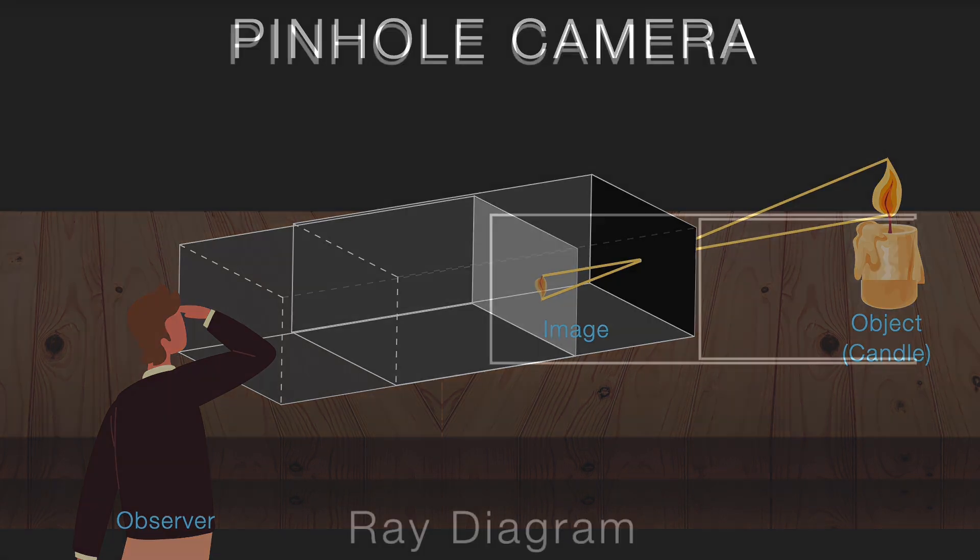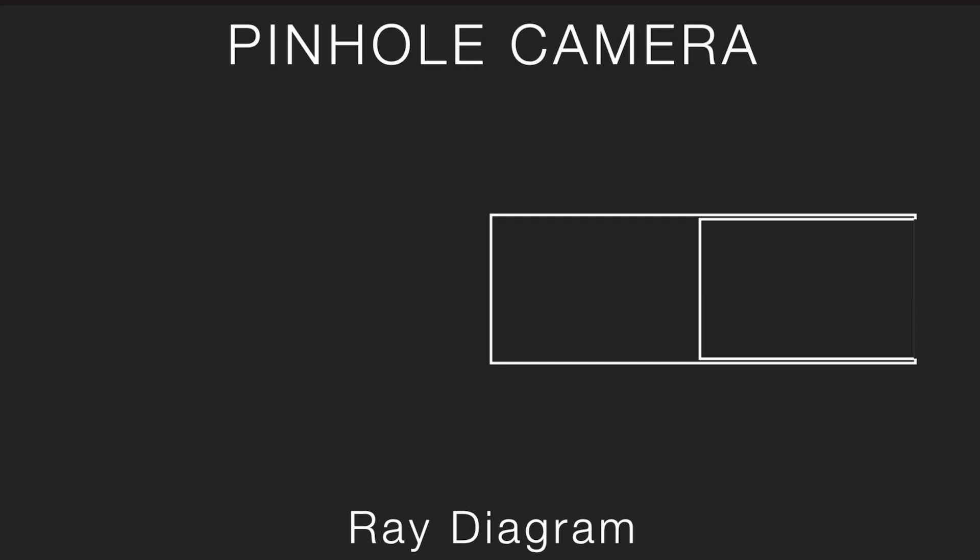Now let's make a ray diagram for the image formation of a pinhole camera. First, what do you mean by ray diagram? A ray diagram is when we show light as straight rays to understand how the image is formed by the pinhole.